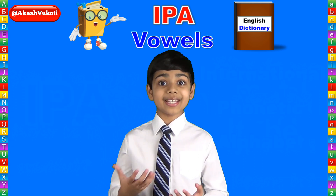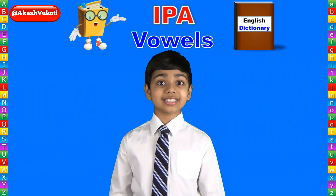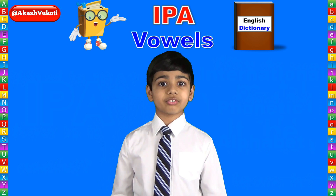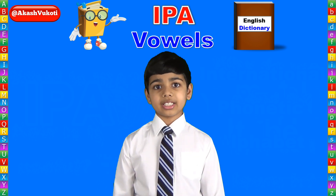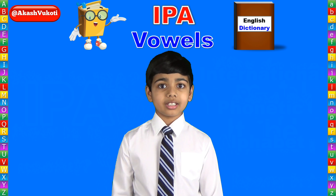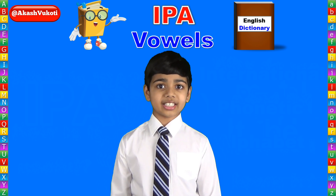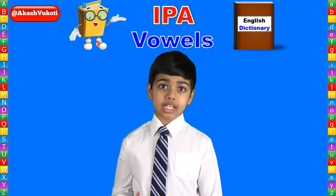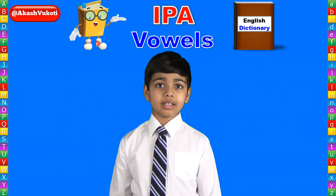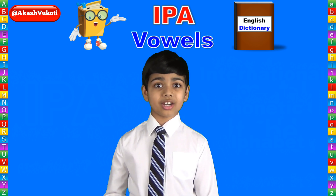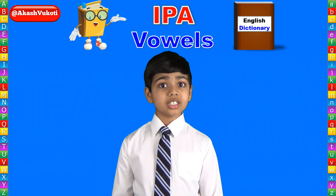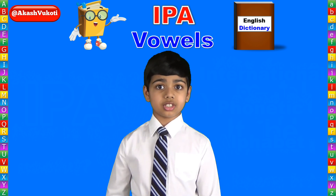Many languages are phonetic, which means the pronunciation actually matches with the written form of the alphabet. For example, many Indian languages are phonetic. English is a non-phonetic language, which means the written form may or may not be the same as the spoken form. It means, in English, a letter can have more than one sound. Therefore, a spelling of the word does not actually help us know the correct pronunciation of that word.